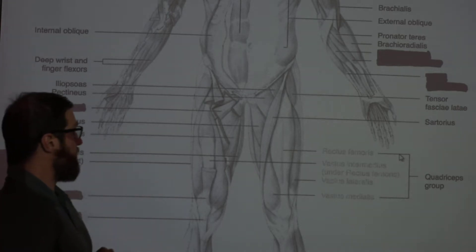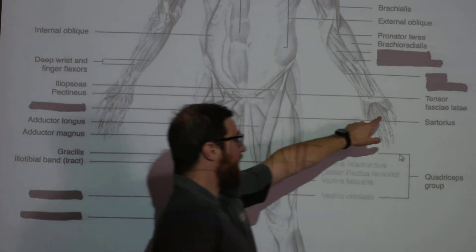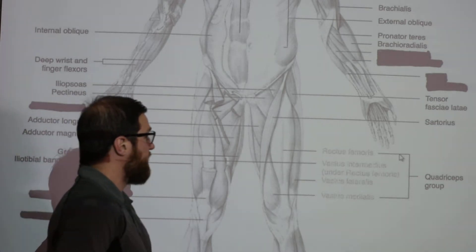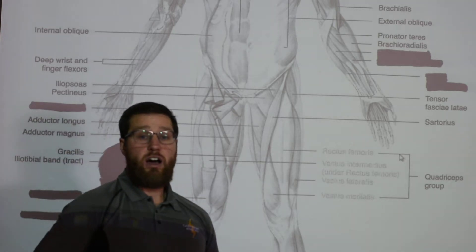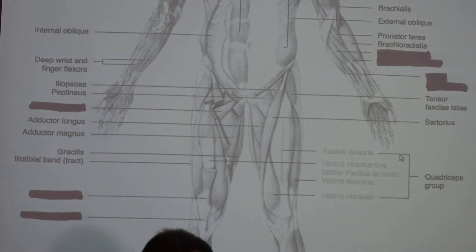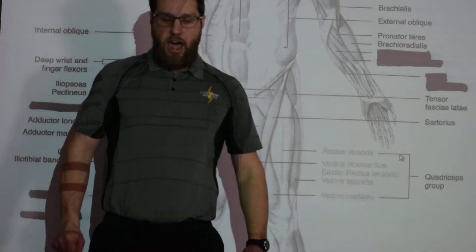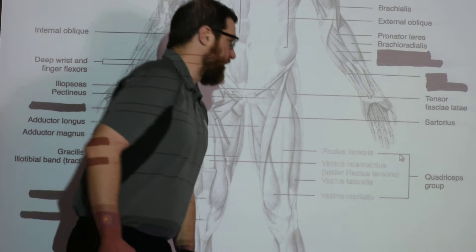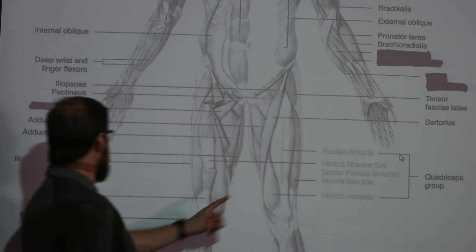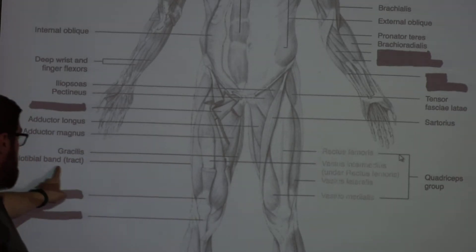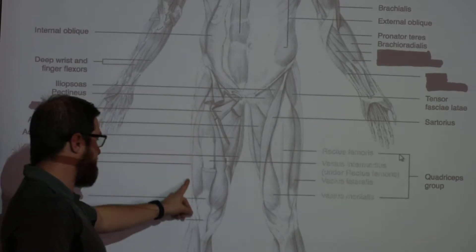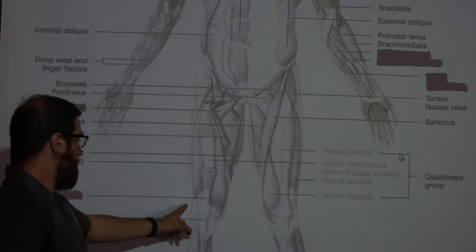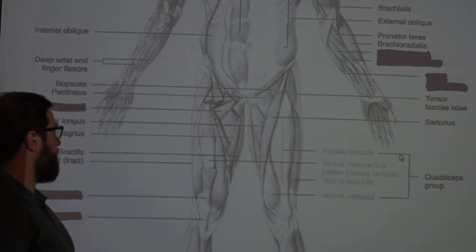The first lower body muscle to note is your tensor fasciae latae — my favorite muscle name, sounds like something you'd order at Starbucks. It is a major hip abductor, moving your leg away from the midline. It is connected to the iliotibial band, or IT band — a long tendon you may have heard of — which extends all the way down to the tibia, though the IT band itself is not a muscle.